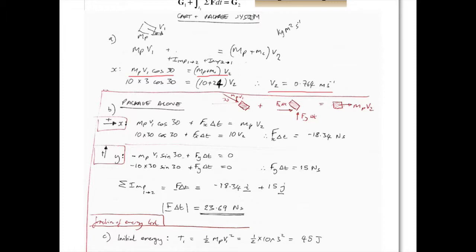Okay, so we need to do this in two directions in order to find the two components of the force. First in the x-direction, the initial momentum is mp·v1·cos30, and this time we add the contribution of the force from the cart on the package, Fx times Δt, and we equate that to the final momentum of the package, mp·v2.